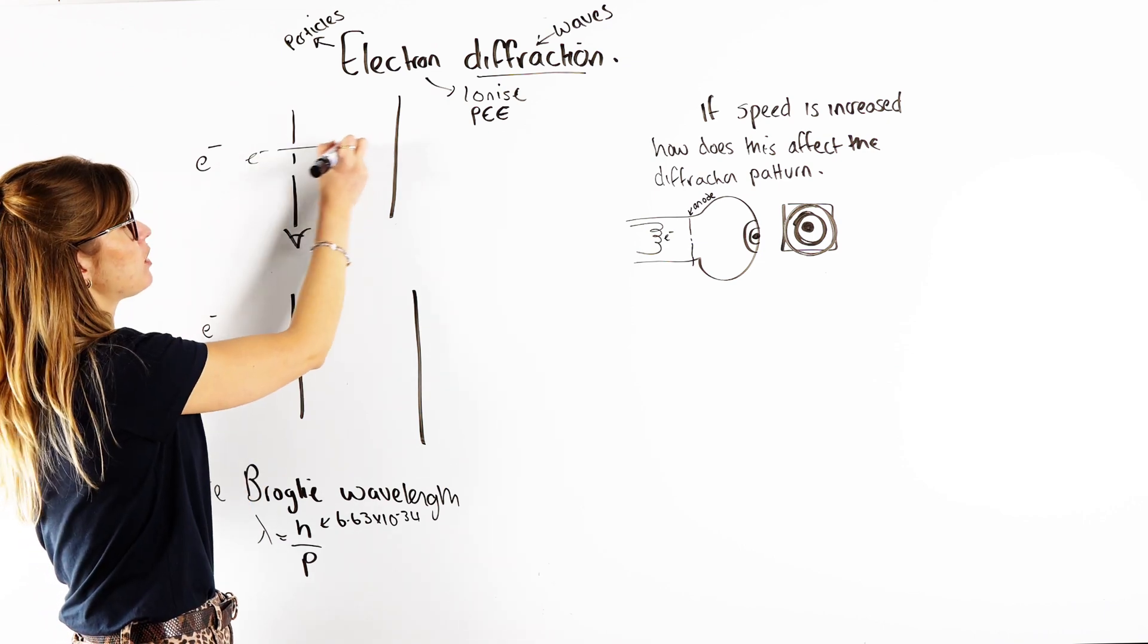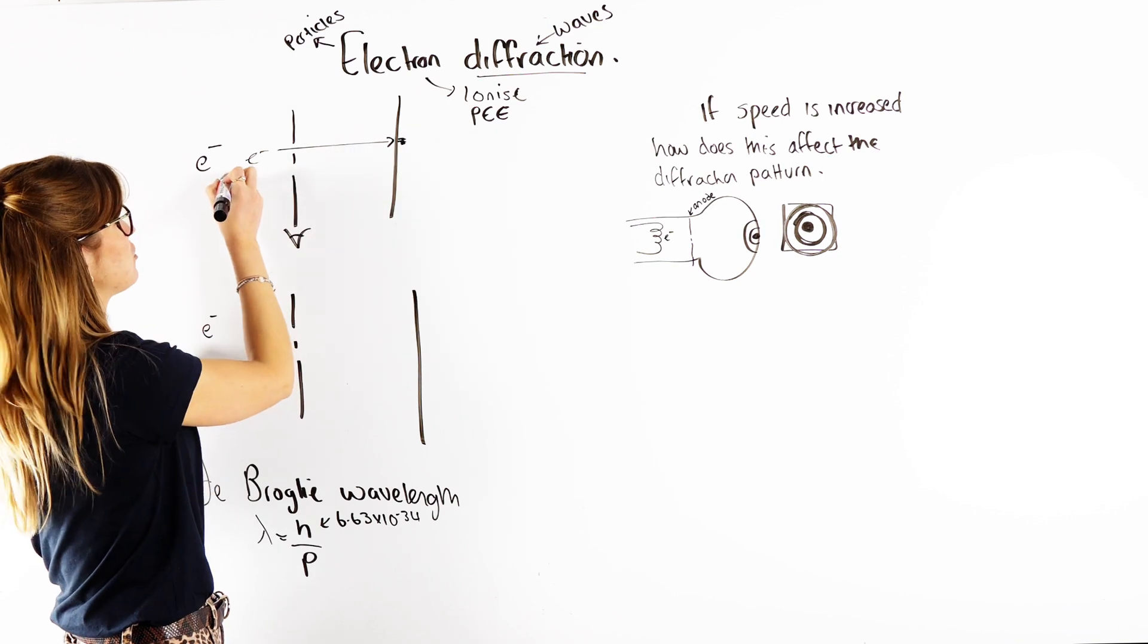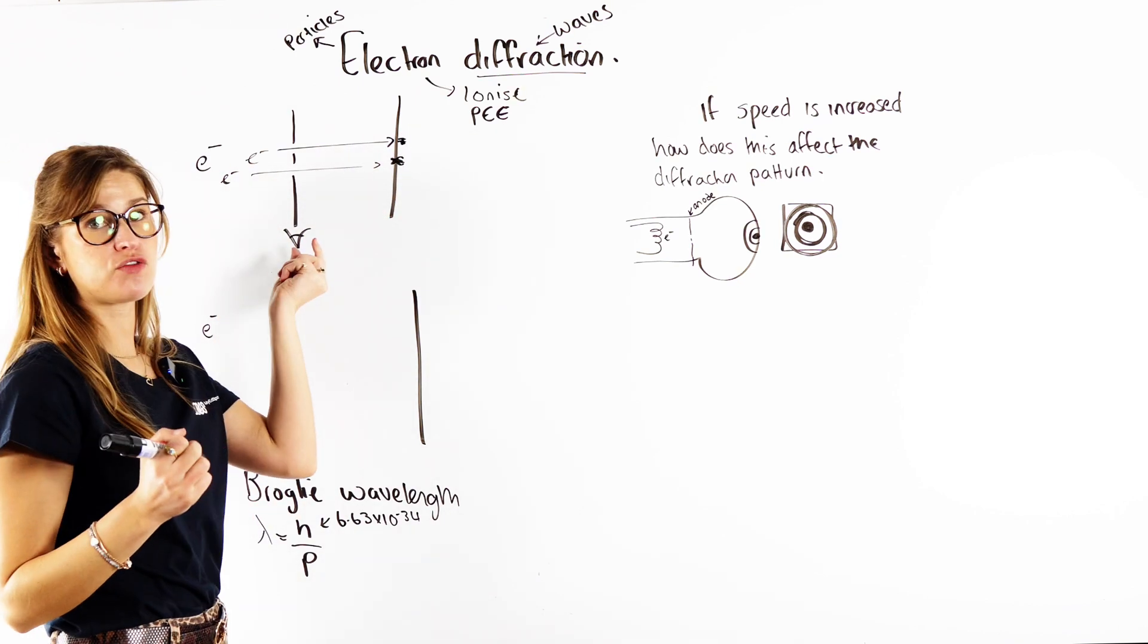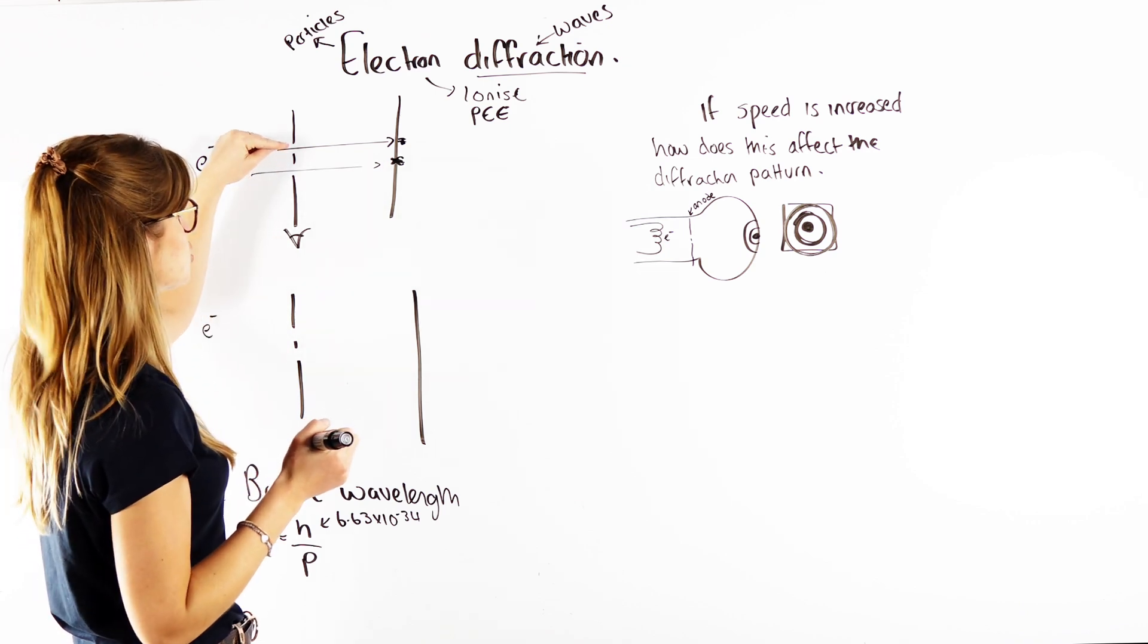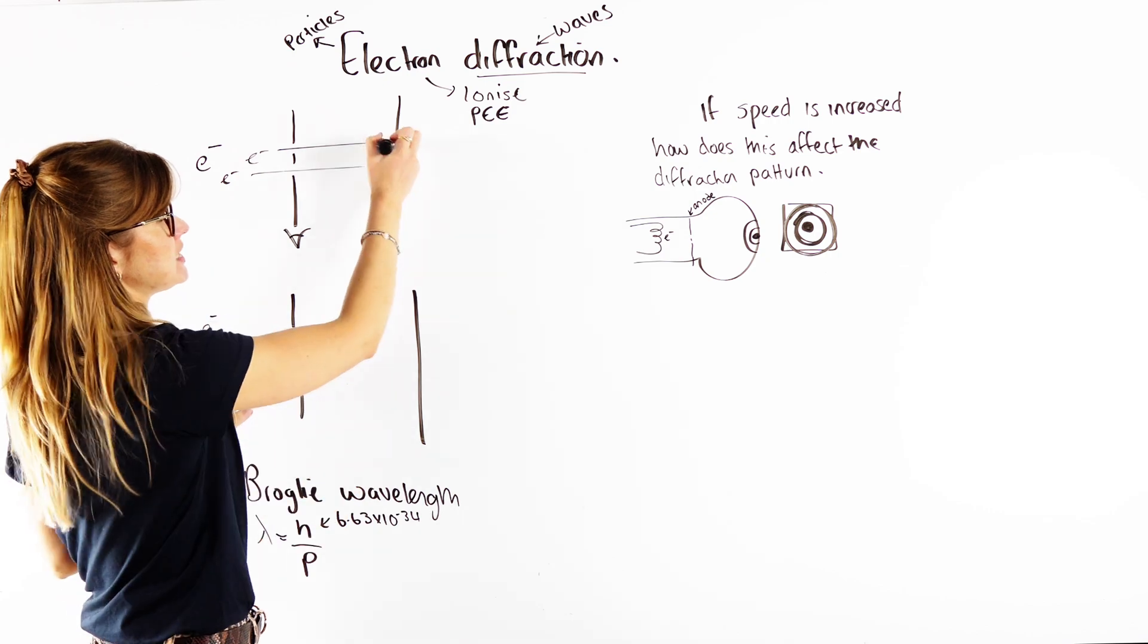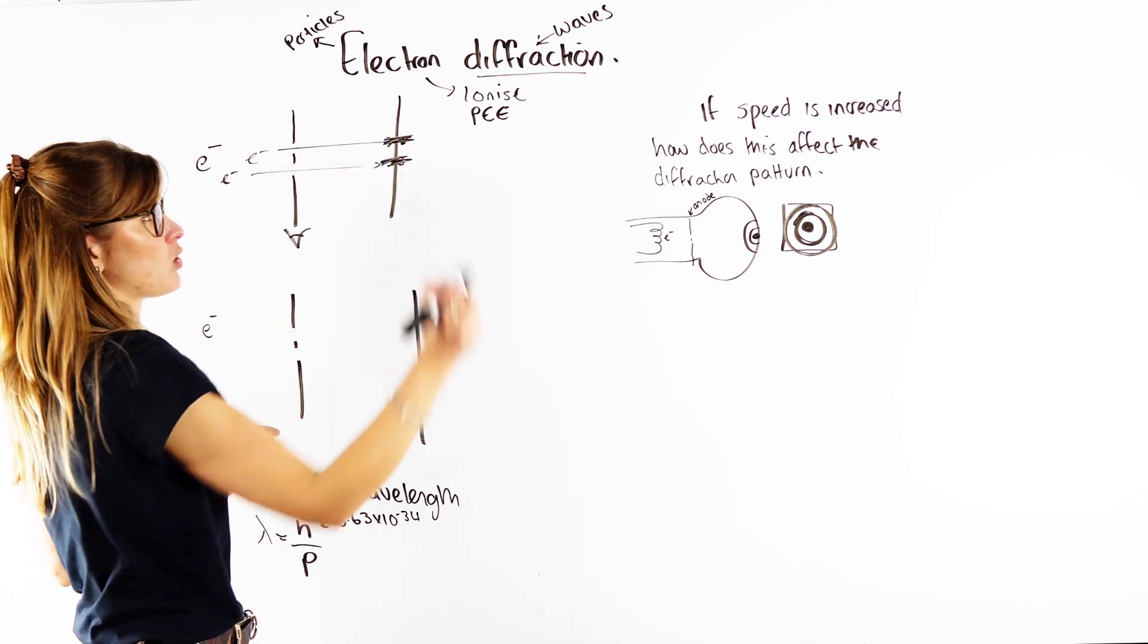So if it goes for the top gap, we're going to get a detection here. And if another electron comes through and it chooses the bottom gap, we're going to get a detection here. So when we actually observe it, we force the electrons to choose which one they're going to go through, and that's why then on the screen we basically just see two bright spots.